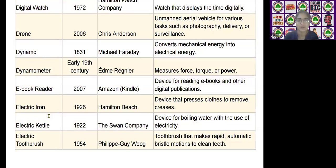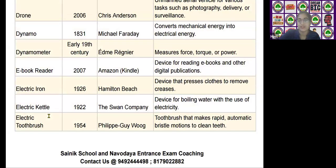The next scientific device is the electric iron, invented by Hamilton Beach in the year 1926. It is used as a device that presses clothes to remove creases.